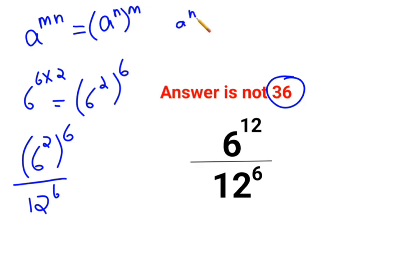Now a raised to m upon b raised to m can be written as a upon b, the whole raised to m.